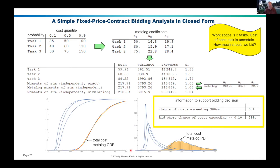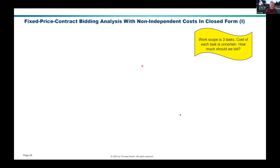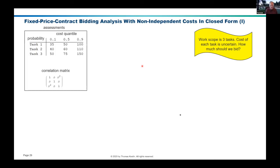But that's assuming independence. What if these costs are correlated in some way? Let's take a look at extending this same bidding analysis with non-independent costs in closed form. The assessments are the same 10, 50, 90 quantiles of the marginal costs over the tasks as before — there's no change at all in these numbers. But now I'm going to allow you to specify, in addition, a correlation matrix.